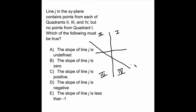Clearly that line is going to have a negative slope — it's going down to the right, not up to the right. So the slope is not undefined, which would be a straight line up and down. The slope of line J is not 0, which would be horizontal. The slope of line J is not positive — in fact, it's negative.